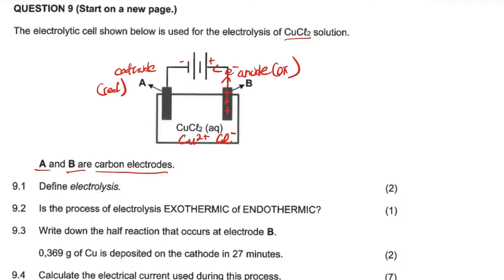The copper chloride is composed of chloride ions, which are negatively charged and attracted to the positively charged anode. The Cu²⁺ copper ions are attracted to the cathode, which gains electrons. Electrons move to electrode A, causing reduction, and there will be deposition of copper at that electrode.